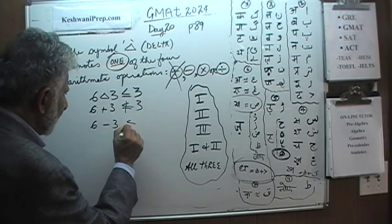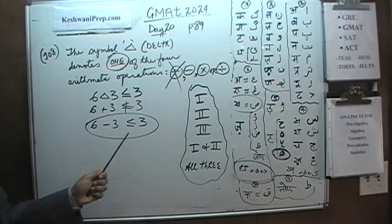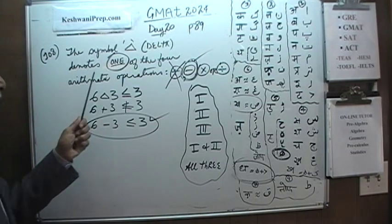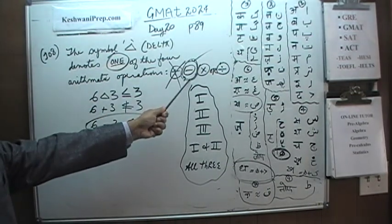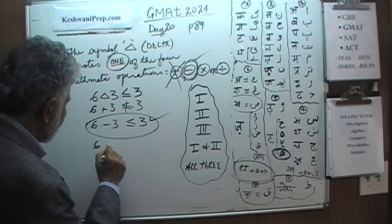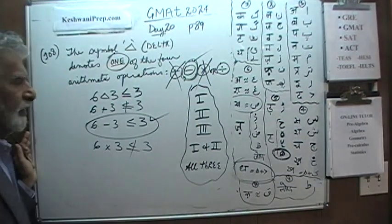Let's start. 6 delta 3 is equal to 3. Let's do the addition. 6 plus 3 obviously is not less than or equal to 3. So we know it does not apply to addition. Let's do the subtraction. 6 minus 3 is less than or equal to 3. 6 minus 3 is 0 which is true. 0 is less than or equal to 3. So that does work.